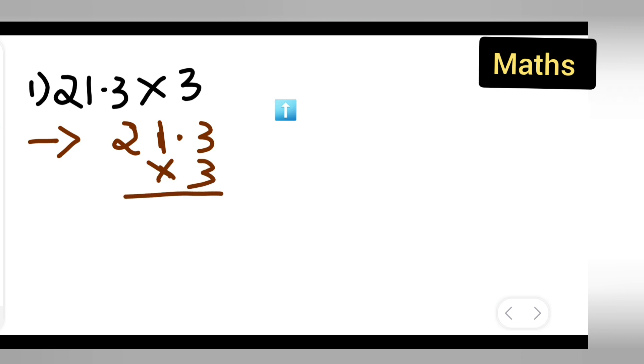Then what I'll do is multiply: 3 times 3, I will get 9, so put 9 over here. Then 3 times 1 is 3, write down 3 over here. And next, 3 times 2 is 6, so write down 6.